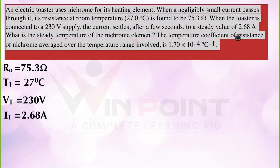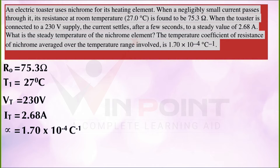The temperature coefficient of resistance of nichrome, averaged over the temperature range involved, is 1.7 × 10⁻⁴ per degree Celsius. So alpha = 1.7 × 10⁻⁴ °C⁻¹.